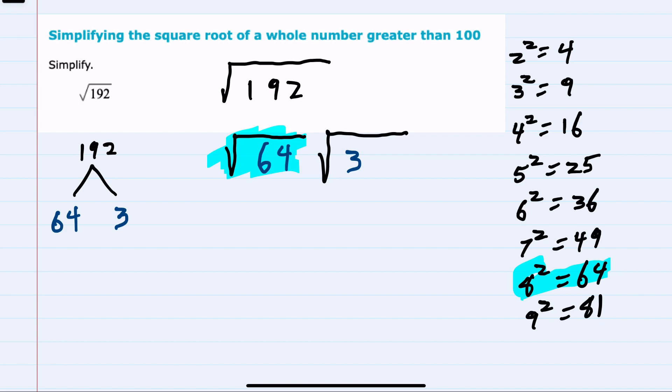So the 64 comes out of the square root as an 8, and we're left under the radical with just the 3. So we've taken out the largest perfect square that we could, and we've simplified here to just 8 times the square root of 3.